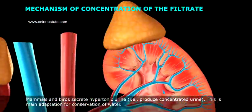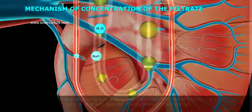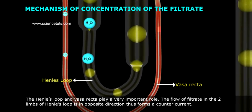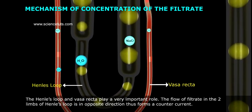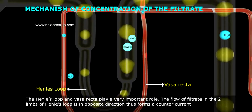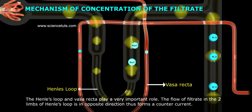This is a main adaptation for conservation of water. The Henle's loop and Vasa recta play a very important role. The flow of filtrate in the two limbs of Henle's loop is in opposite directions, thus forming a countercurrent.